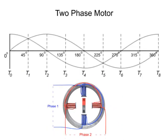The two sinusoidal waves are 90 degrees out of phase. This phase discrepancy is the key to creating rotation of the rotor.